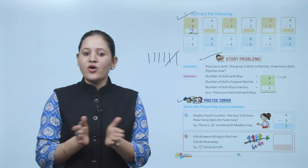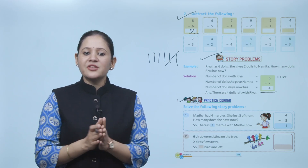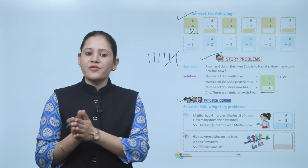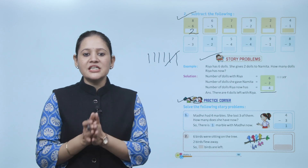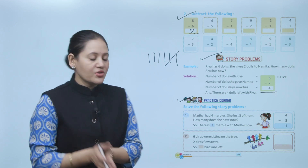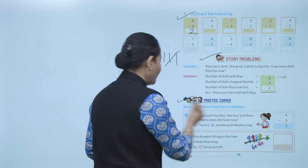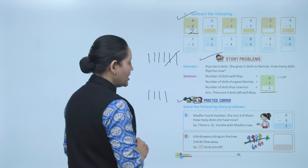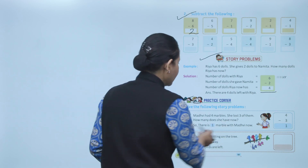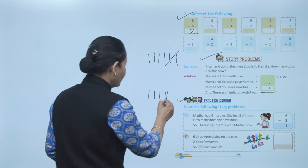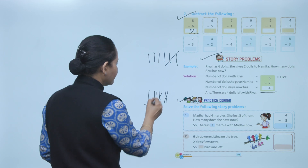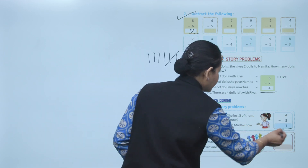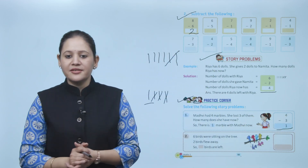Next, practice corner — solve the following story problem. Madhvi has 4 marbles. She lost 3 of them. How many does she have now? Total she has 4 marbles: 1, 2, 3, 4. She lost 3: 1, 2, 3. How many are left? 1. So 4 minus 3 equals 1.